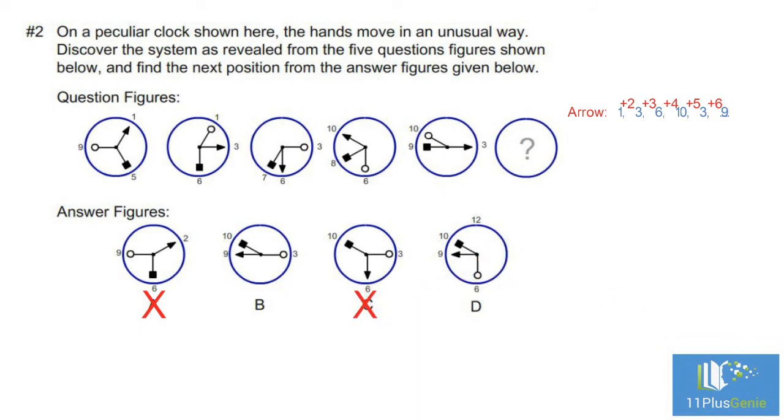The hand with the black square moves forward one hour at a time, so on the next clock it must point towards 10.